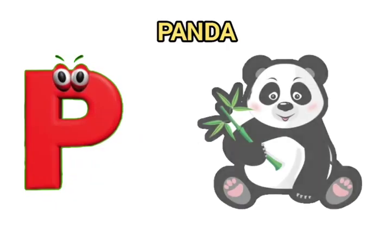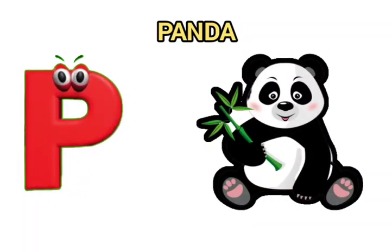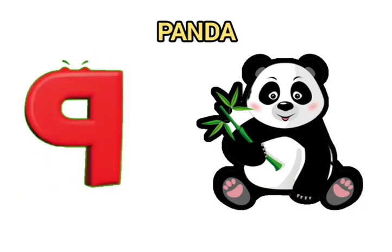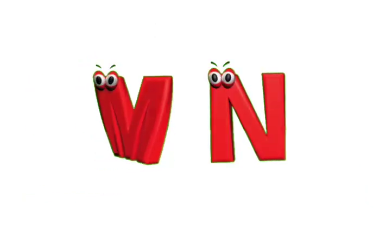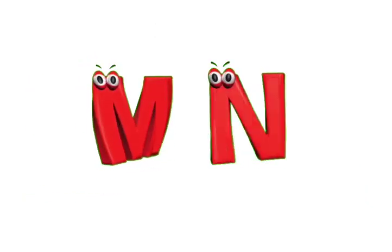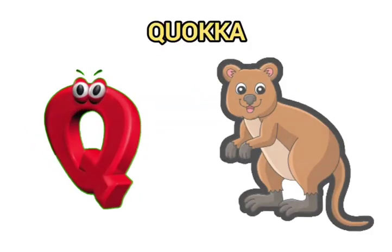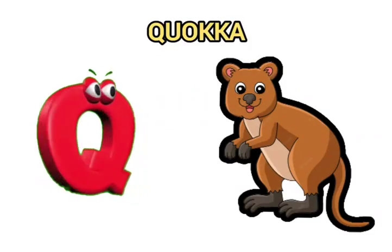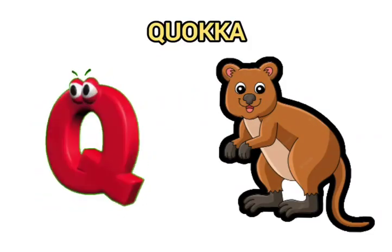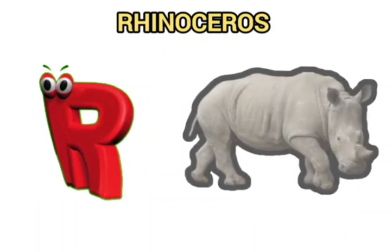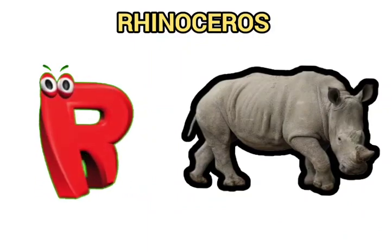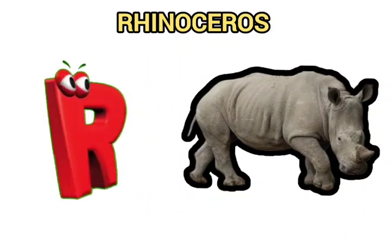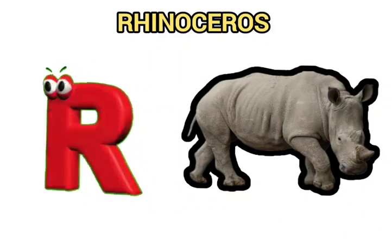P is for panda, panda. Q is for quokka, quokka. R is for rhinoceros, rhinoceros.